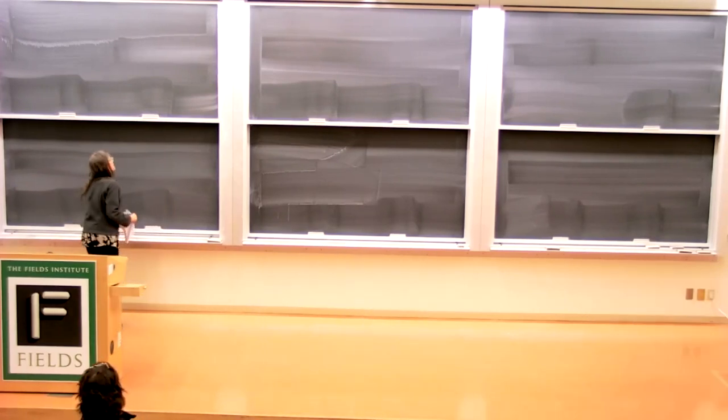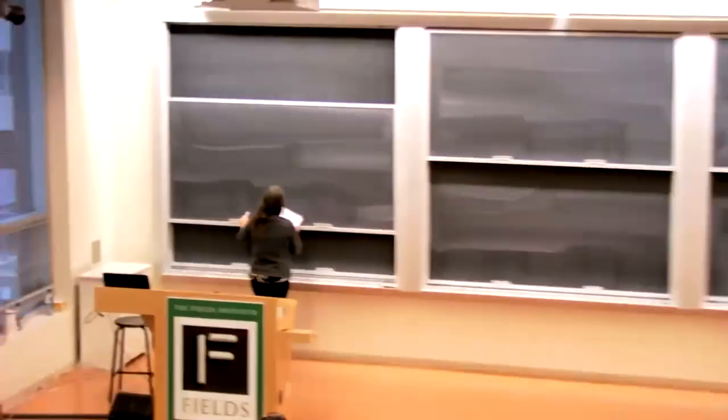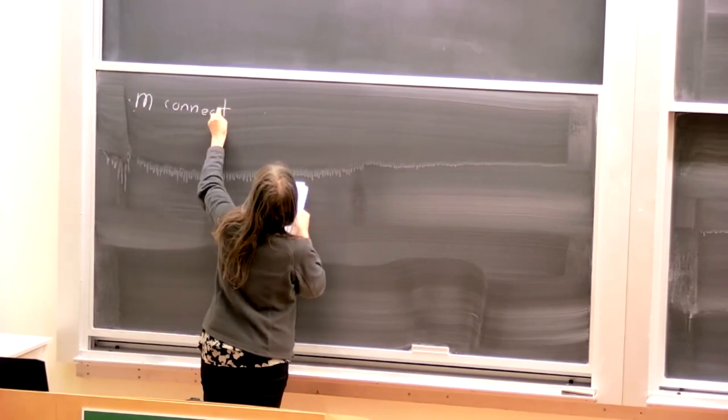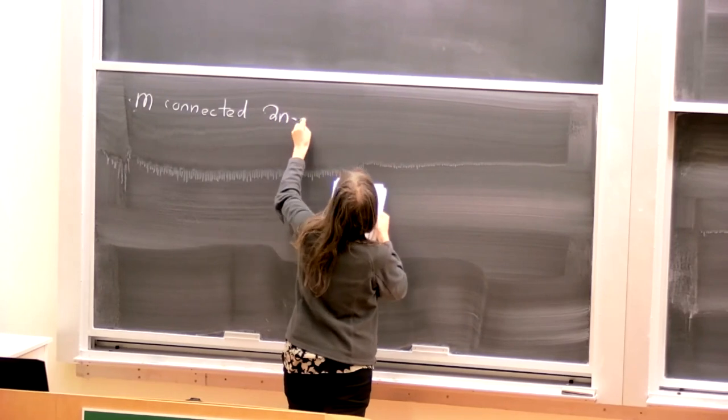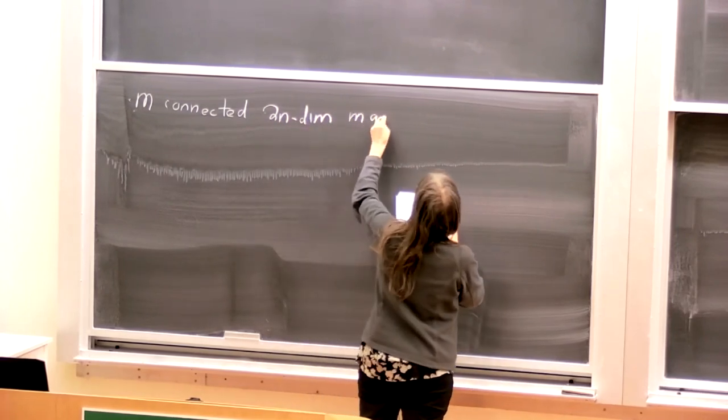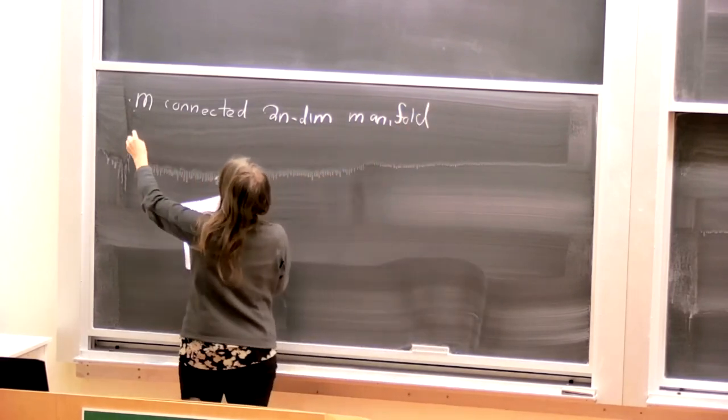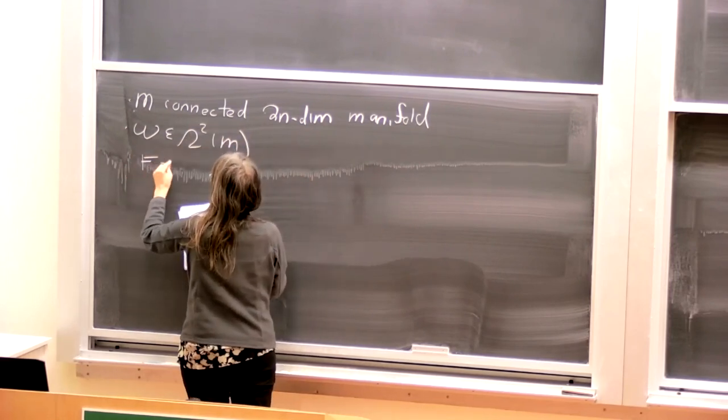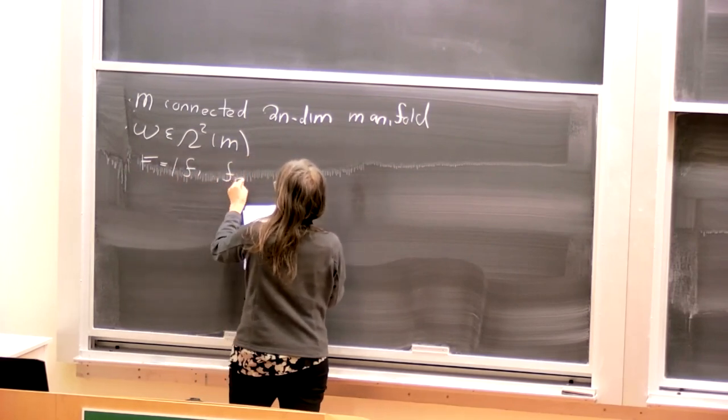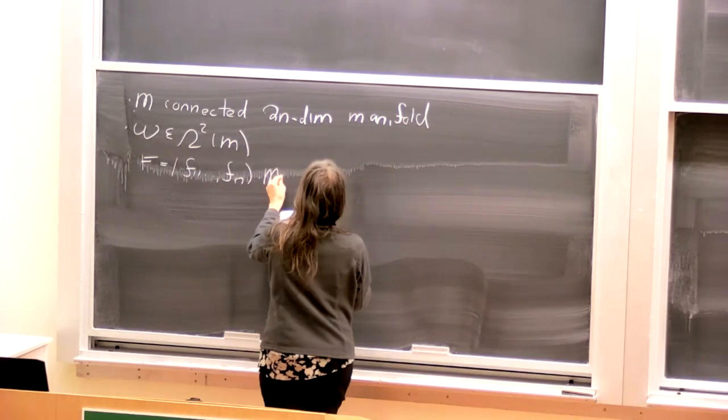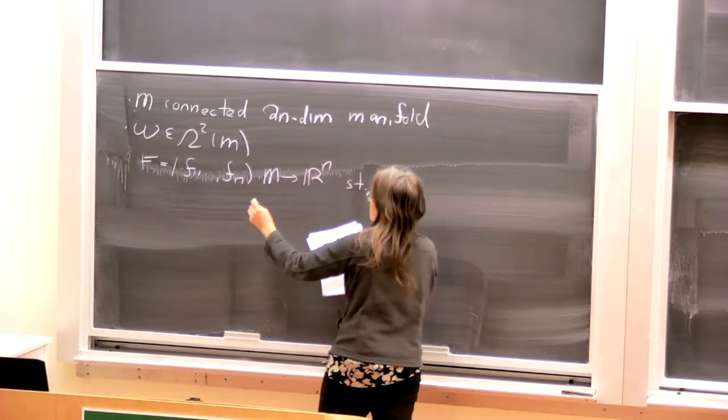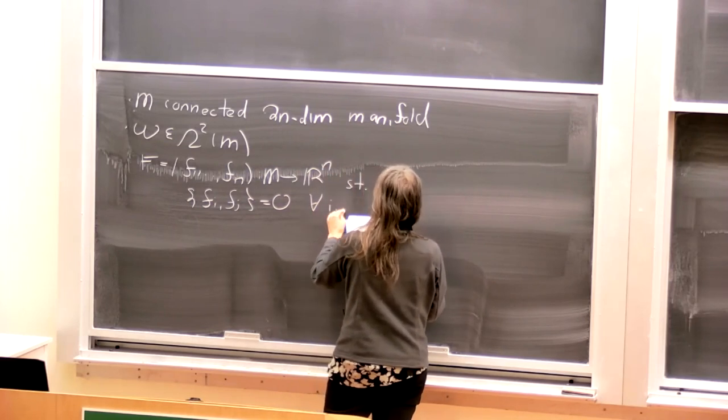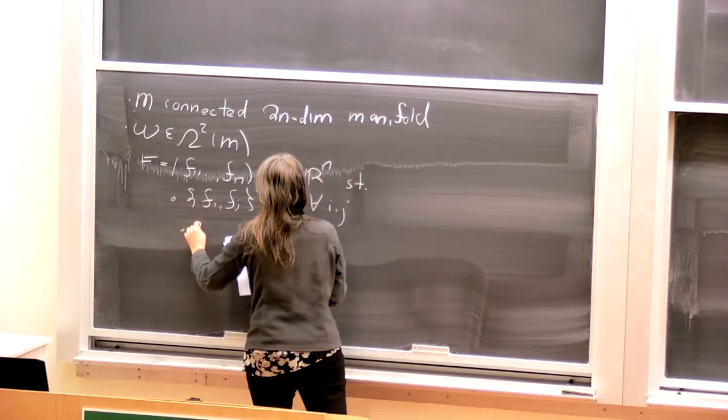Okay, so let me start with the basic objects that I'll be dealing with. M is a connected 2n dimensional manifold. Omega is going to be a symplectic form, and I want to have a function from M to R^n with two properties. First of all, f_i and f_j Poisson commute for all i and j.